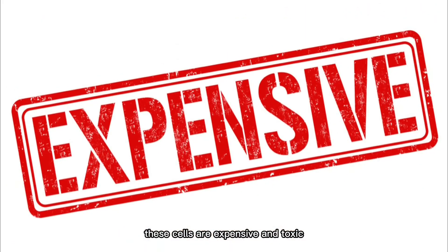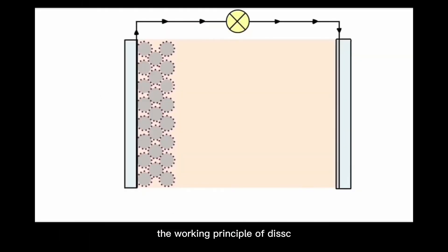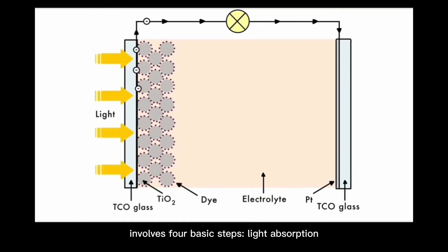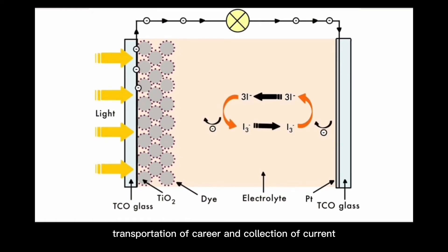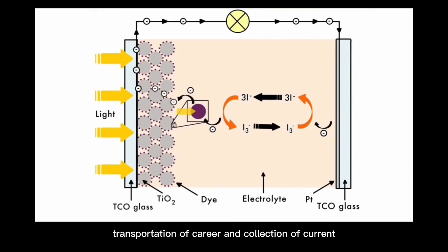The working principle of DSSCs involves four basic steps: light absorption, electron injection, transportation of carrier, and collection of current.